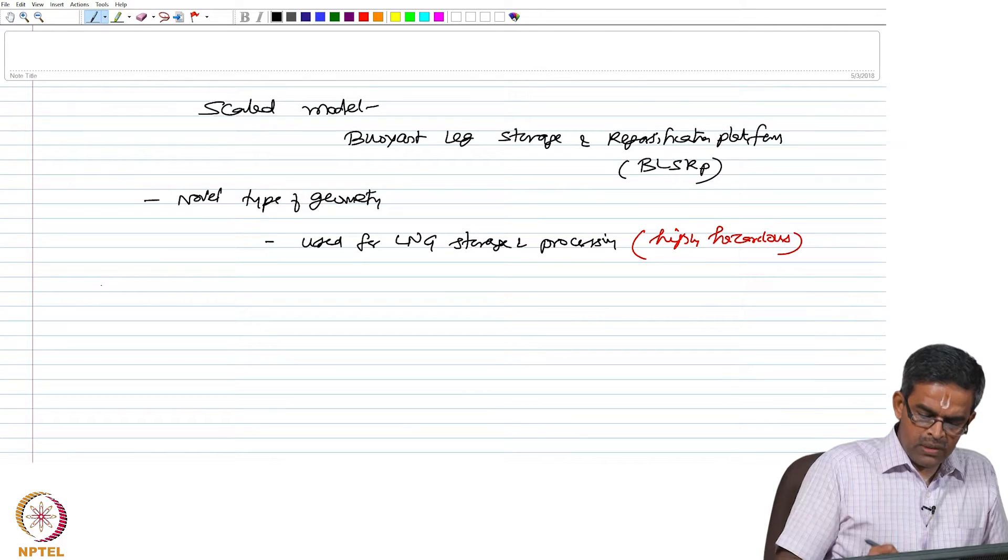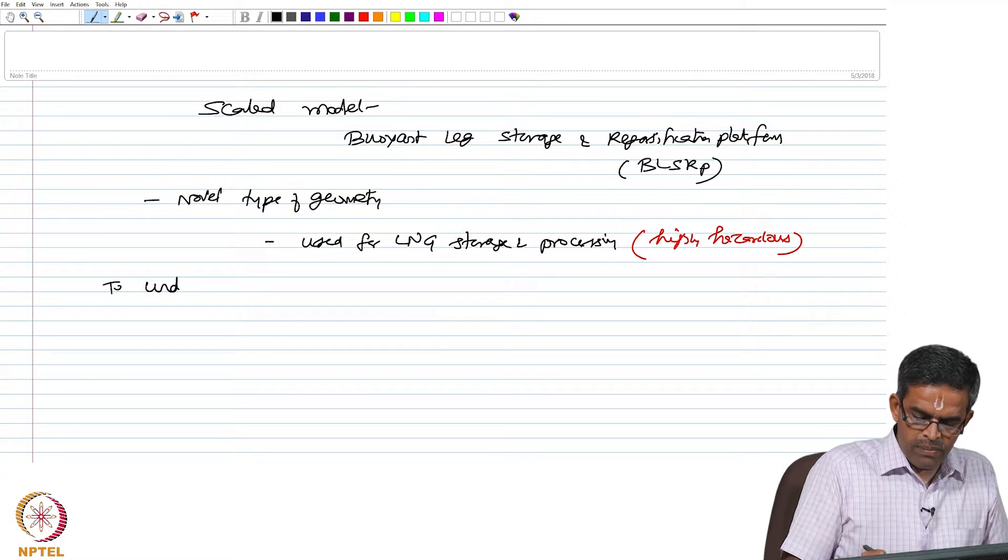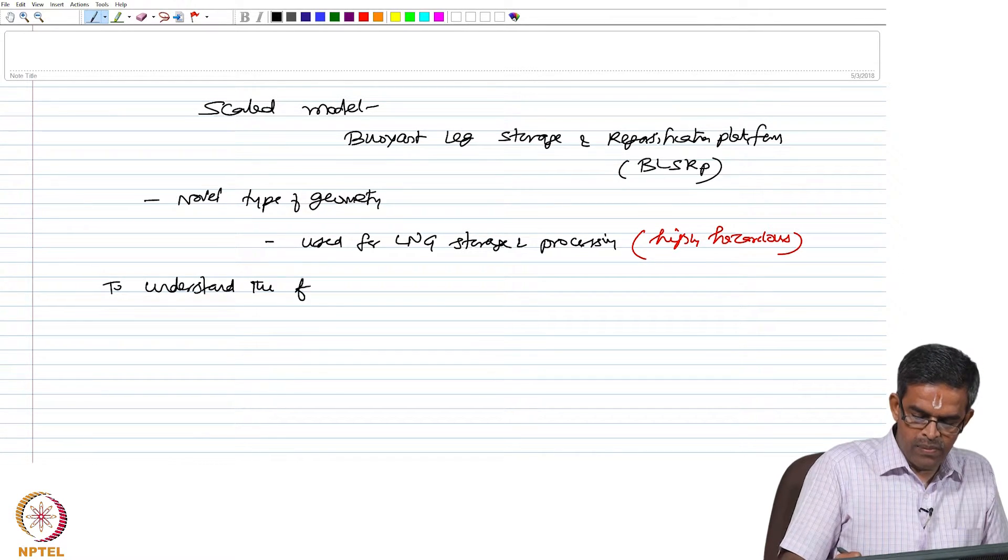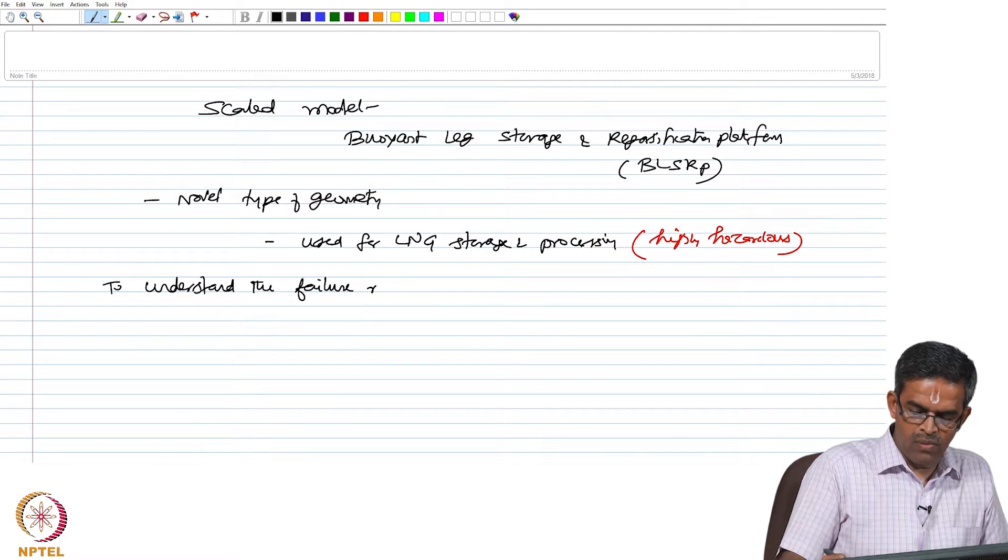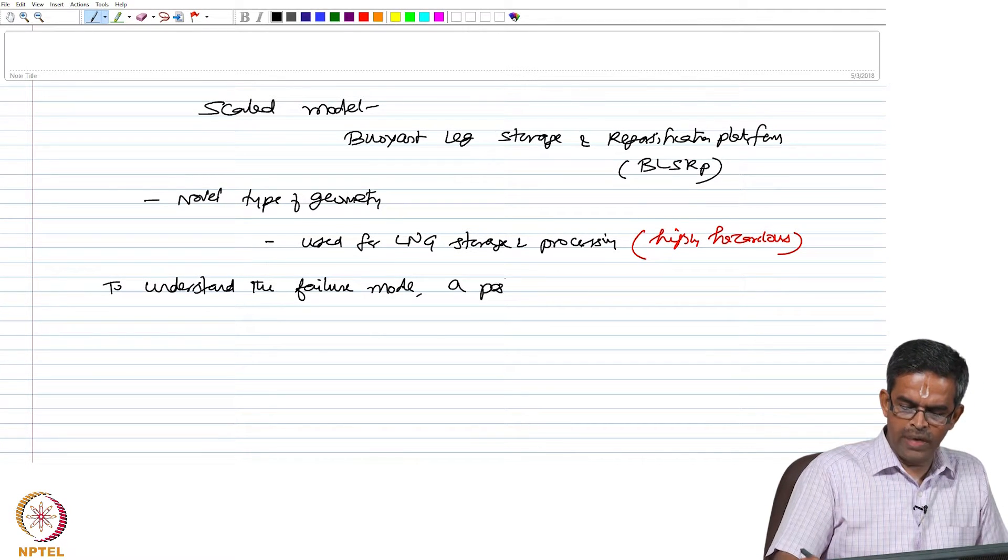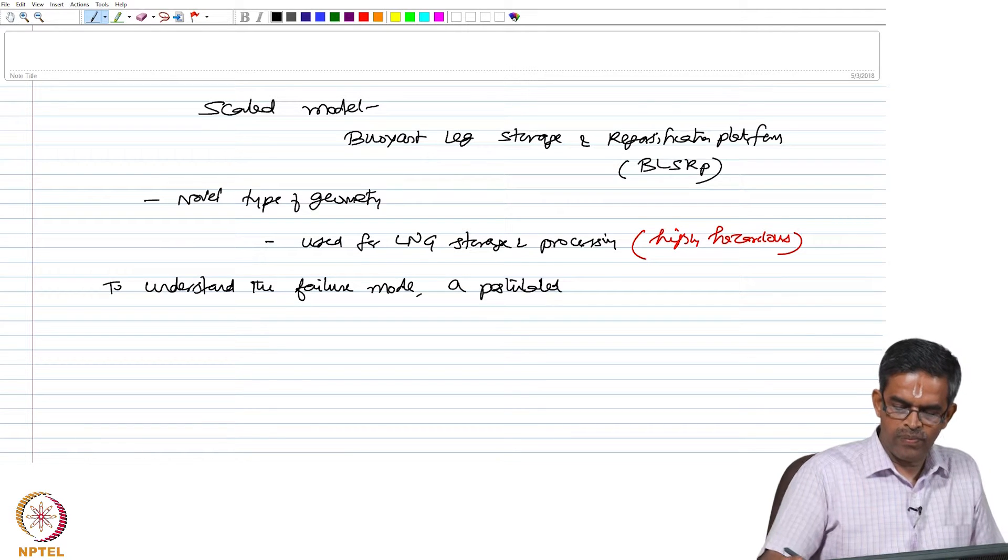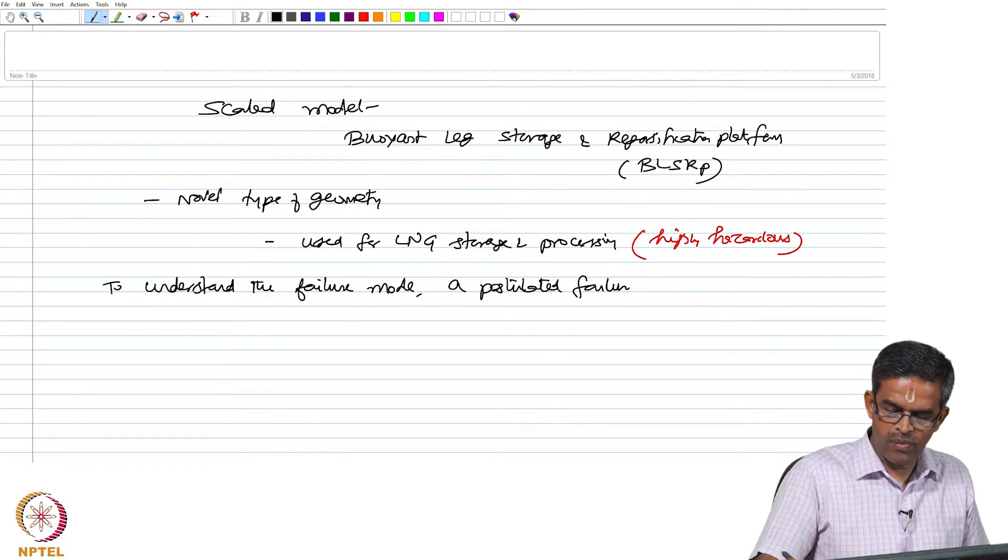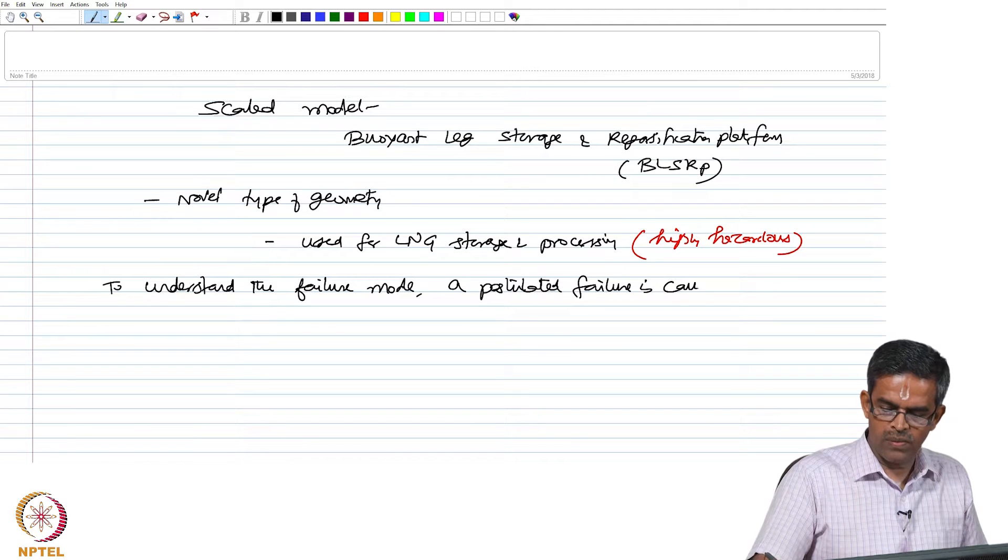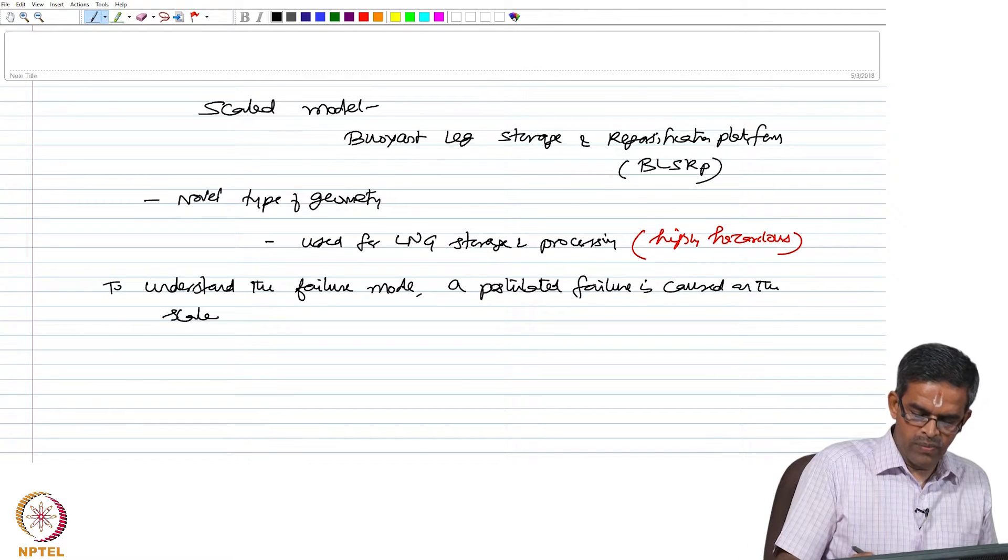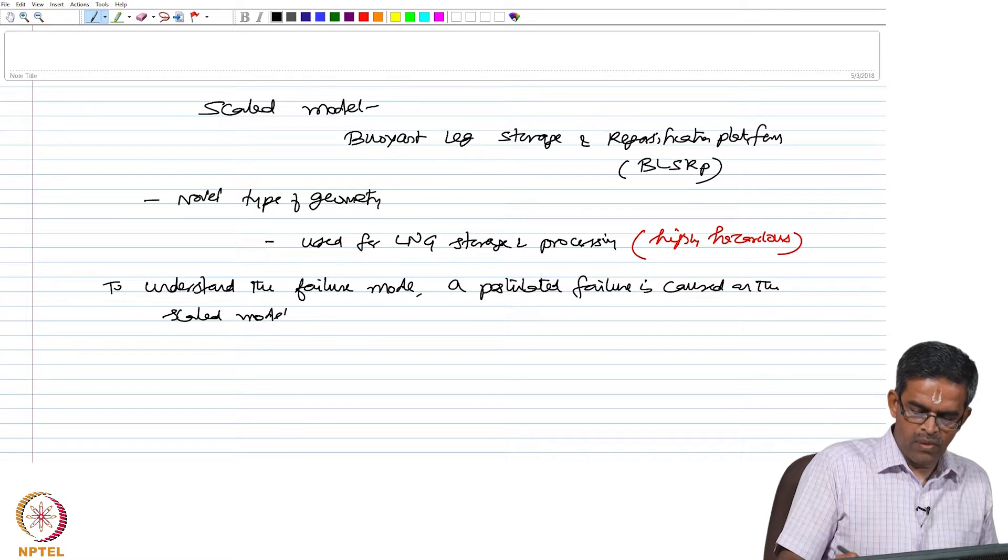To understand the failure mode, a postulated failure is caused on the scaled model of BLSRP.